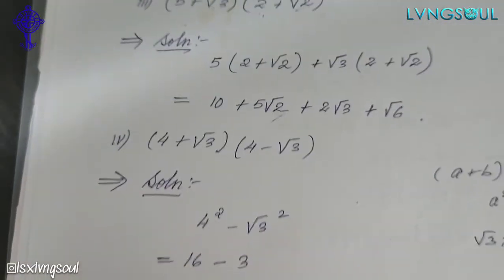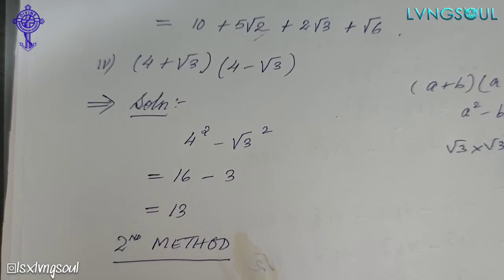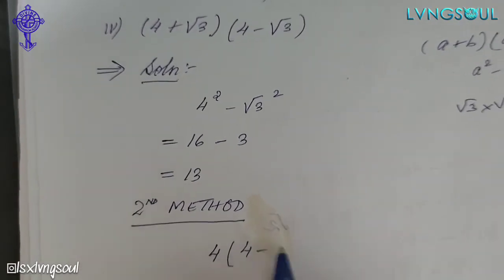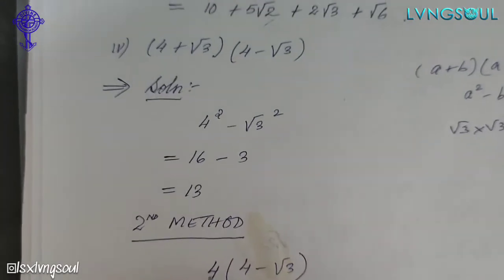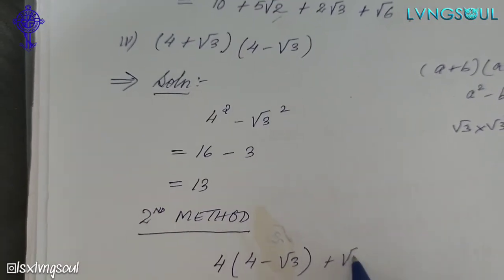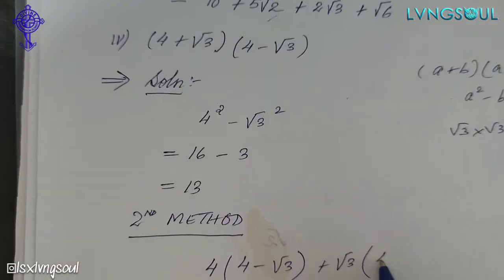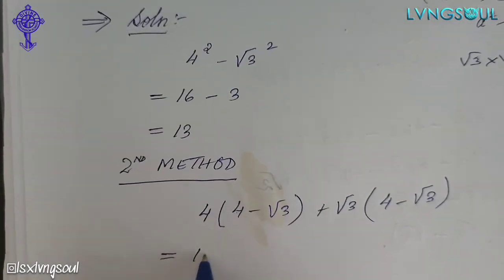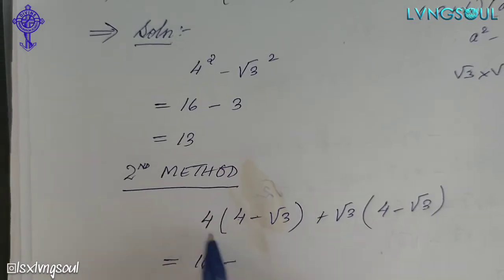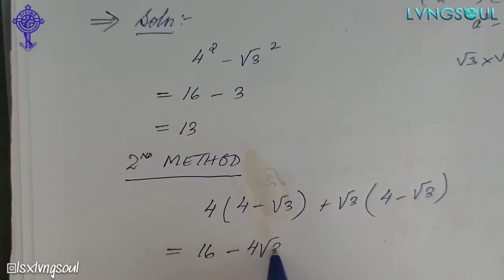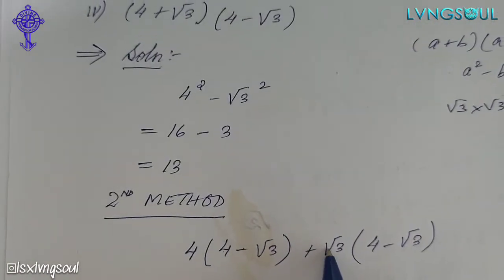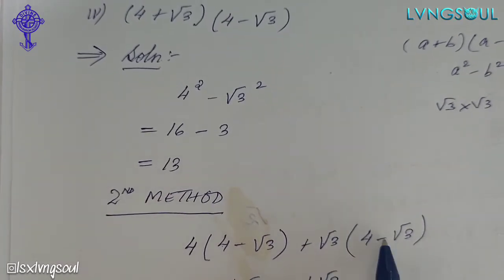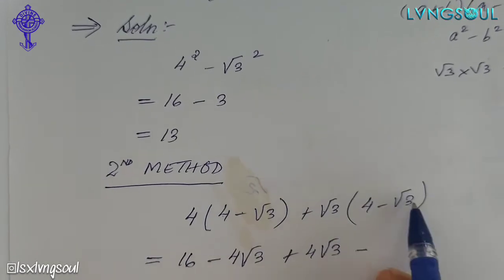4 plus root 3, then 4 times 4 minus root 3 multiplied by 4 times 4 plus root 3. 4 minus root 3 is equal to root 3. 4 times 4 is equal to 16, minus 4 times 1 is 4. Root 3 is equal to root 3. Root 3 into 4 is equal to root 3. Plus into minus gives minus. Root 3 into root 3 is equal to 3.